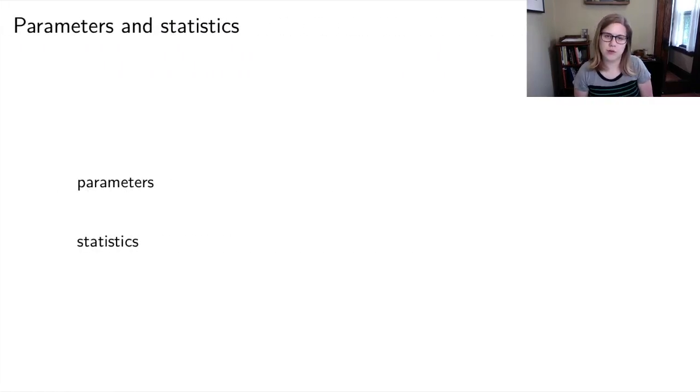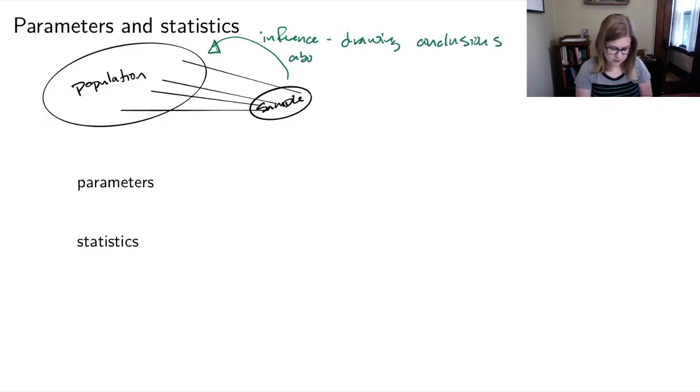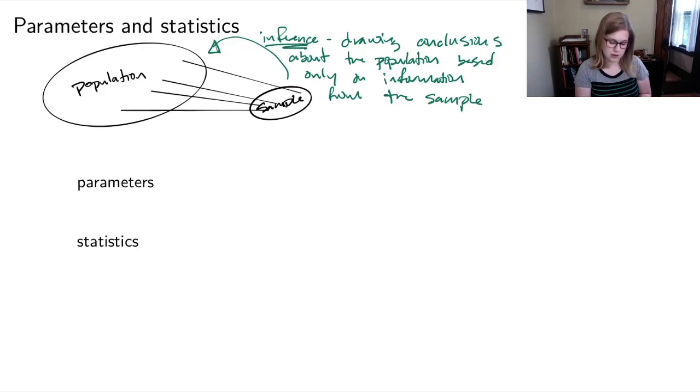I just want to take a step back and do a little review from stat 220, intro stat, about parameters and statistics. So if you have taken intro stat with me, you've seen me draw this picture many times. So there's a big circle - that's the population. And then we're going to have a smaller version of the same thing, and that's going to be our sample. And the way that we make our sample is we take random draws from the population. So the sample is just going to be like a mini version of our population. And our goal in statistics is to move back from the sample to the population. That process is called inference, which is drawing conclusions about the population based only on information from the sample.